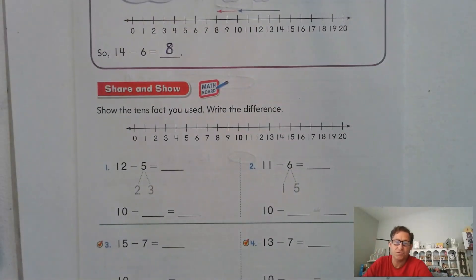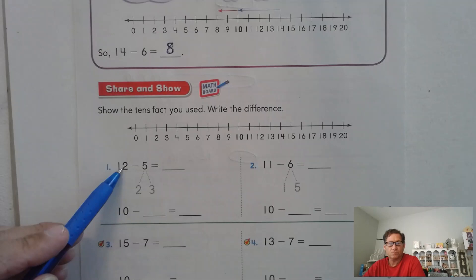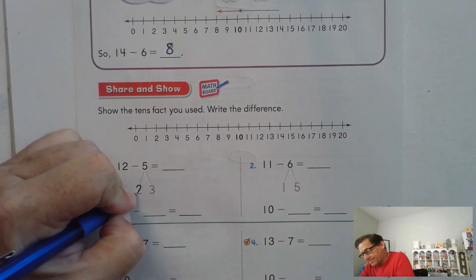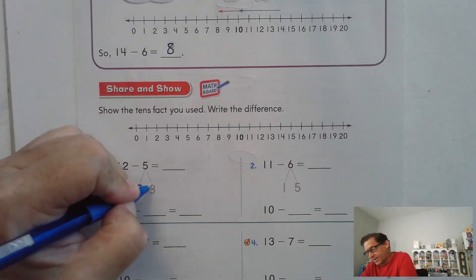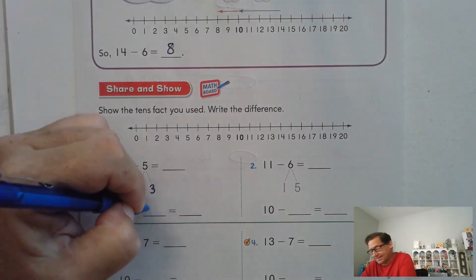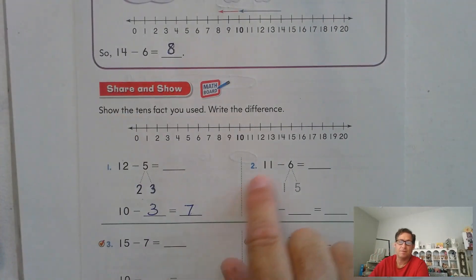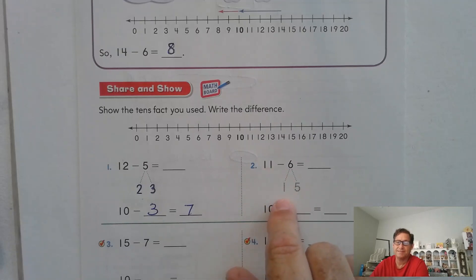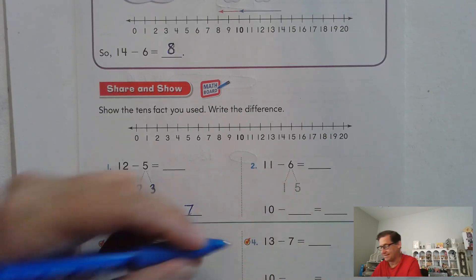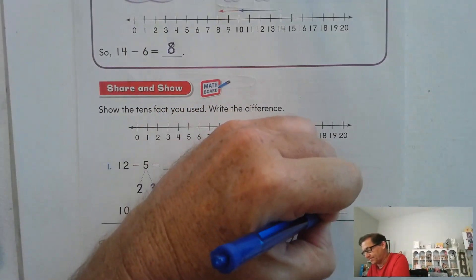Show the tens facts you need to use and write the difference. So 12 take away five equals what? Two take away two gives me zero, so if we break five into two and three, we can subtract 12 in two steps: 12 take away two is 10, and 10 take away three is seven. For 11 take away six: one take away one gives me zero, so we have 10. 11 take away one is 10, and 10 take away five is five.